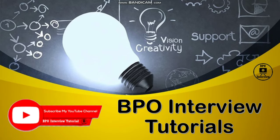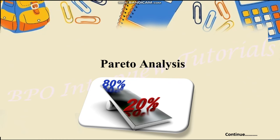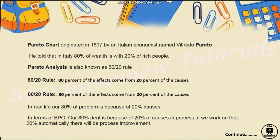Let's start with the Pareto analysis and Pareto chart tutorial. The Pareto chart originated in 1897 with an Italian economist named Wilfredo Pareto. Pareto analyzed that in Italy, 80% of the wealth was held by 20% of the rich people. This principle is also known as the 80-20 rule.